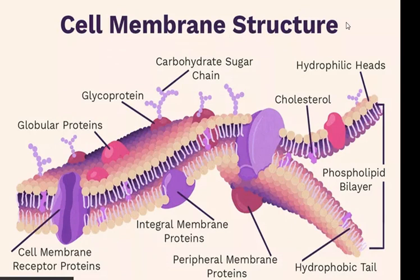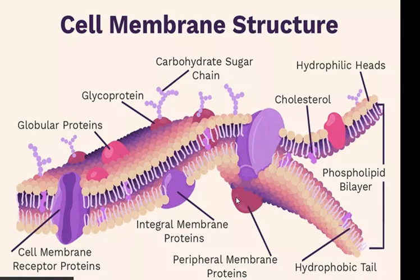The cell membrane is composed of a double layer of phospholipids. Each layer is composed of a head and a tail — the head is hydrophilic and the tail is hydrophobic. We also have many proteins embedded in the cell membrane called integral proteins. These integral proteins are strongly associated with the membrane and are not easily detached — they act as carriers, receptors, and channels. We also have peripheral proteins, which are loosely attached to the surface and are easily detached.